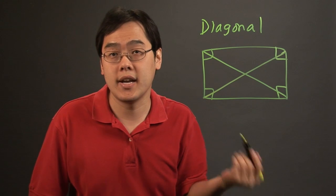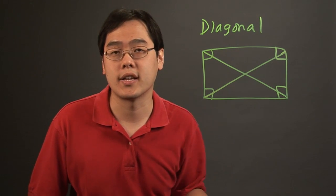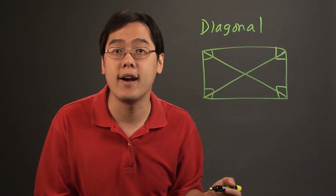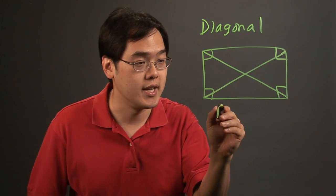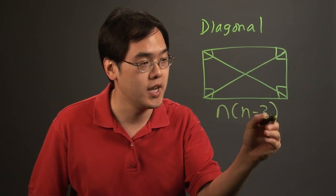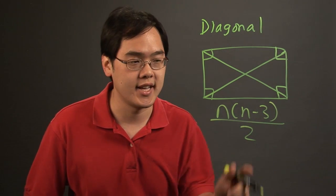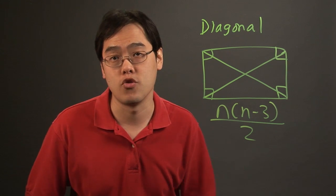So a diagonal is a line segment connecting two non-consecutive vertices of a polygon, and there's a formula associated with how many diagonals you will have given any polygon, and it's n times n minus 3 over 2, where n is the number of sides a polygon has, and that gives you an idea as to how many diagonals can be drawn.